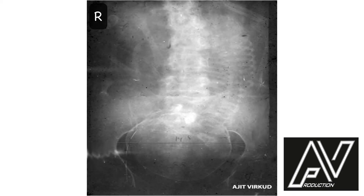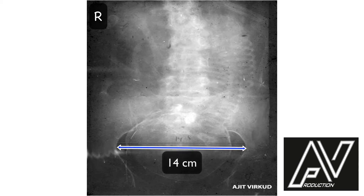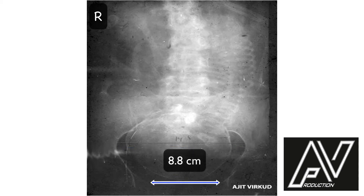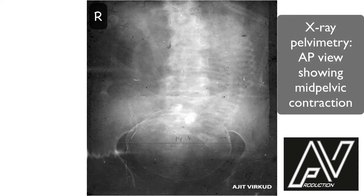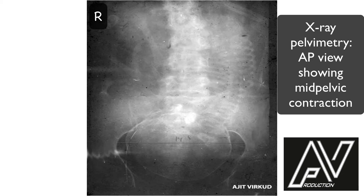This is a plain x-ray of the abdomen and pelvis, AP view, well centralized, well exposed, showing a single fetus in longitudinal lie, flexed attitude, cephalic presentation with vertex as the presenting part. In addition, the transverse diameter of the inlet is measured at 14 cm, and the interspinous diameter is also measured at 8.8 cm. Since the measured diameter is magnified, the actual interspinous diameter will be less than 8.8 cm. The shape of the inlet is round and the sub-pubic angle is not visualized in this plane. Therefore, my diagnosis is obstetric x-ray pelvimetry, AP view, showing mid-pelvic contraction.